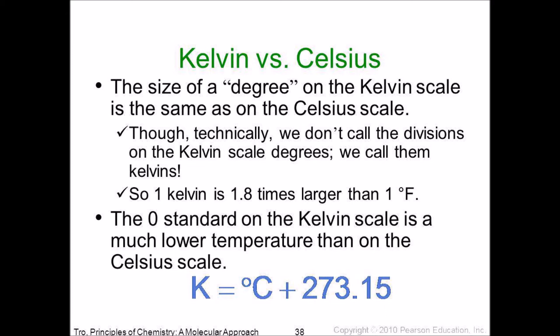So, you're going to be given a certain Celsius degree, and to convert that to Kelvin, just add that number to 273.16 or 273.15.